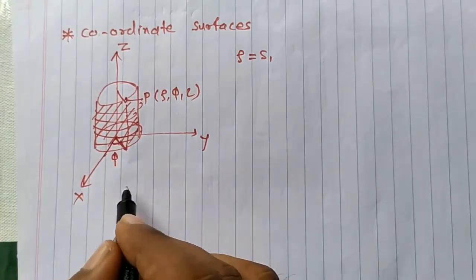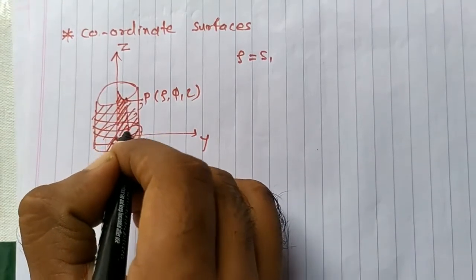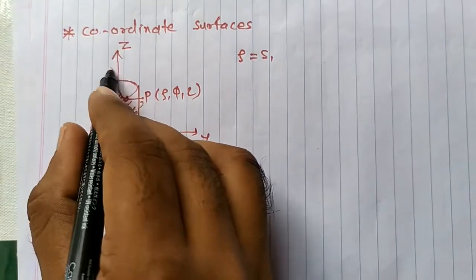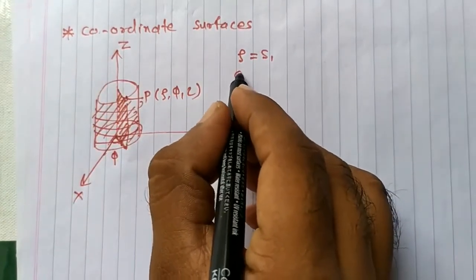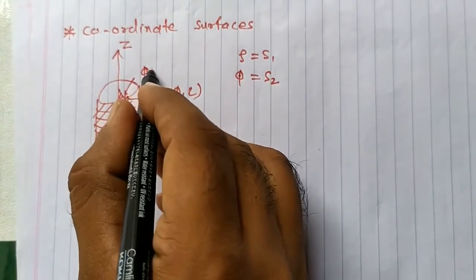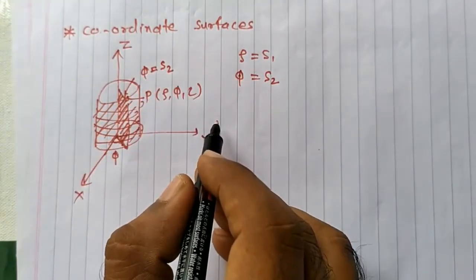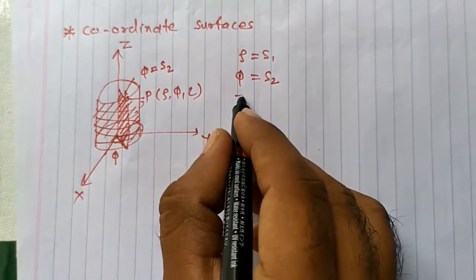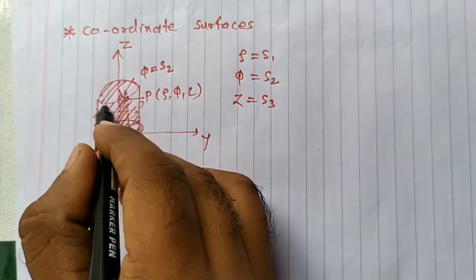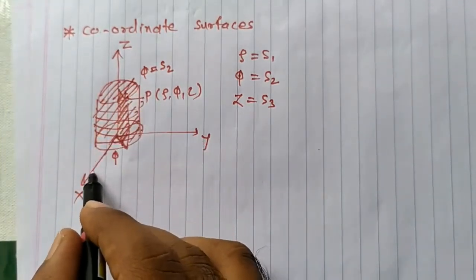The second coordinate surface is the plane phi equals s2. This is the plane whose edge is on the z-axis, forming the angle phi. So phi equals s2 is our second coordinate surface. The third coordinate surface will be z equals s3, which is a plane parallel to the xy-plane at a distance z from the xy-plane.